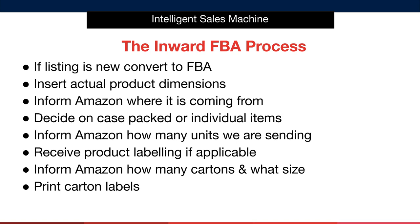We also need to confirm if our products are case packed or individual items. To qualify for case packed items, which I recommend, each carton must contain the same number of units and have the same dimensions as well as the same weight. If your product cartons are anything other than this, they will be considered individual items. With individual items, Amazon can request how many you need in each delivery, which further complicates things. So remember how much easier case packed items can be with only very minor tweaks needed when ordering products.